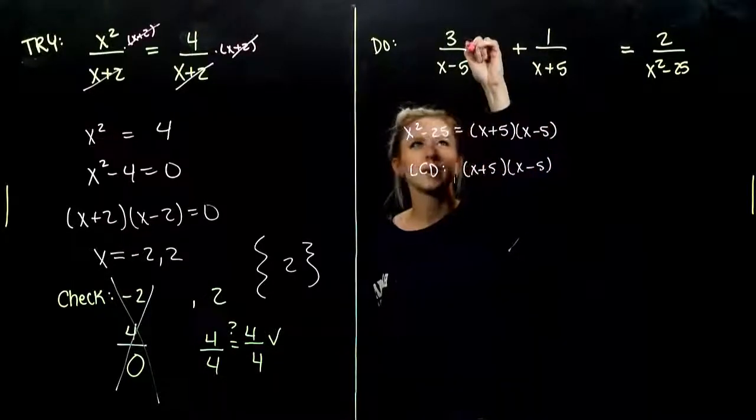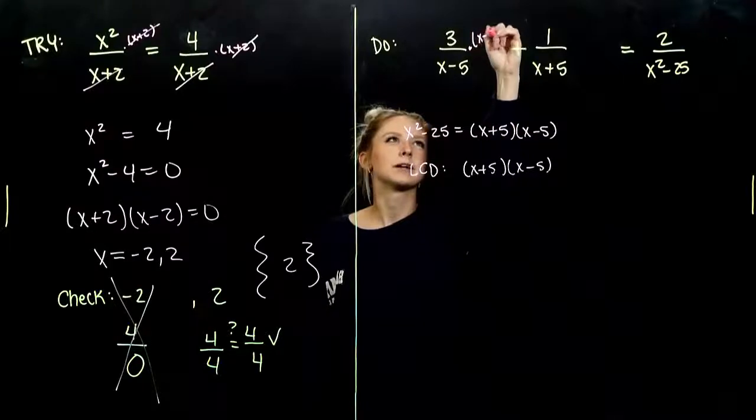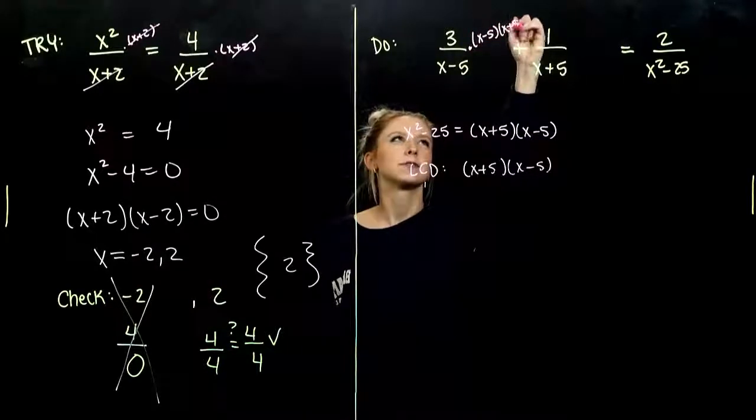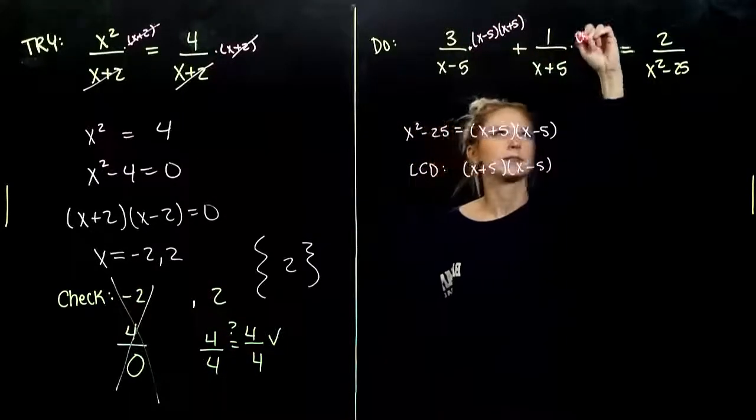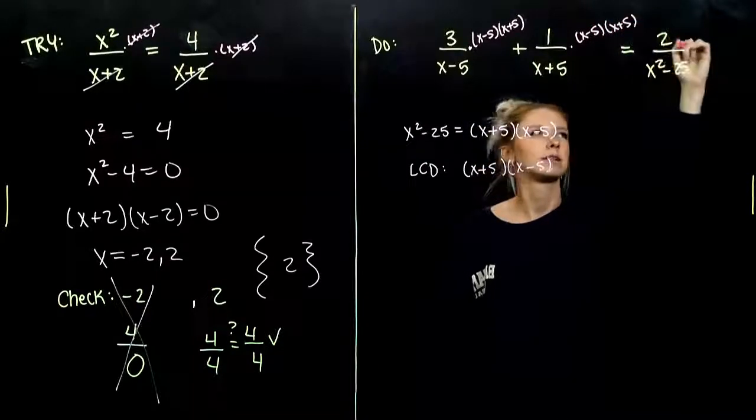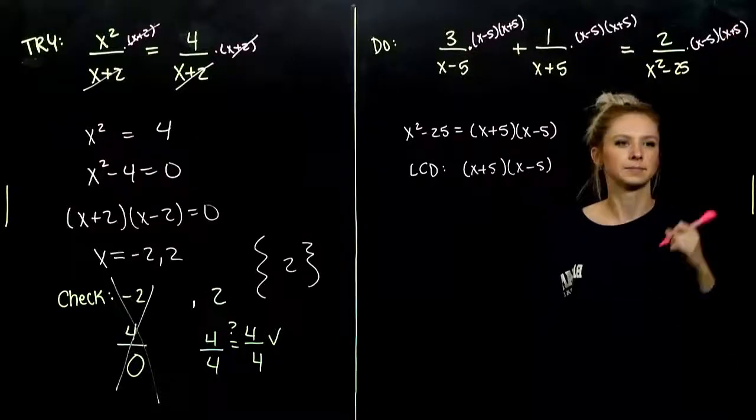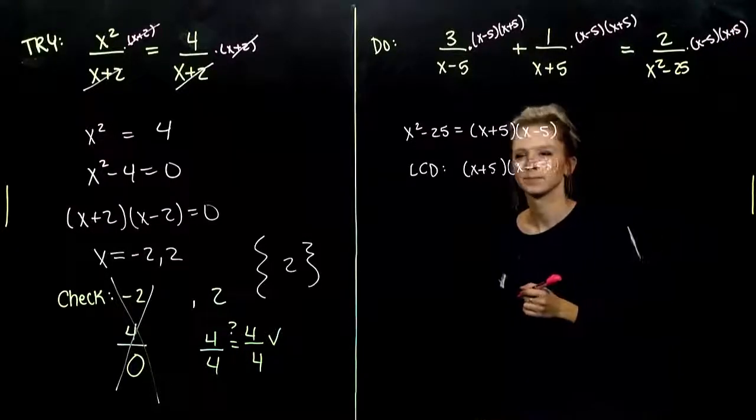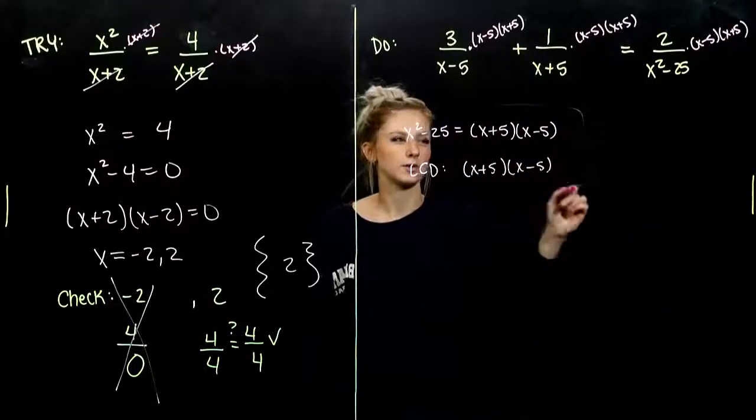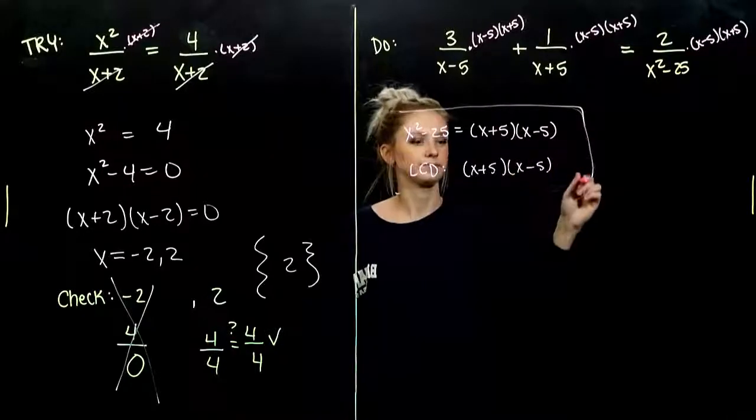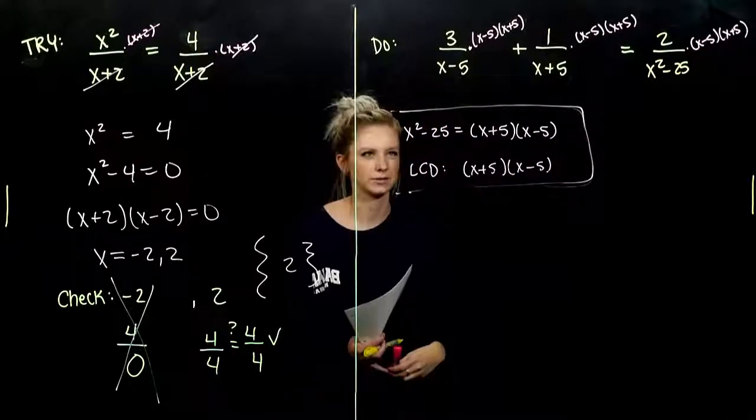So, as I multiply by my LCD, I've got X minus 5, X plus 5, X minus 5, X plus 5, X minus 5, X plus 5. So, let's start to cancel out the terms, see what we're left with.